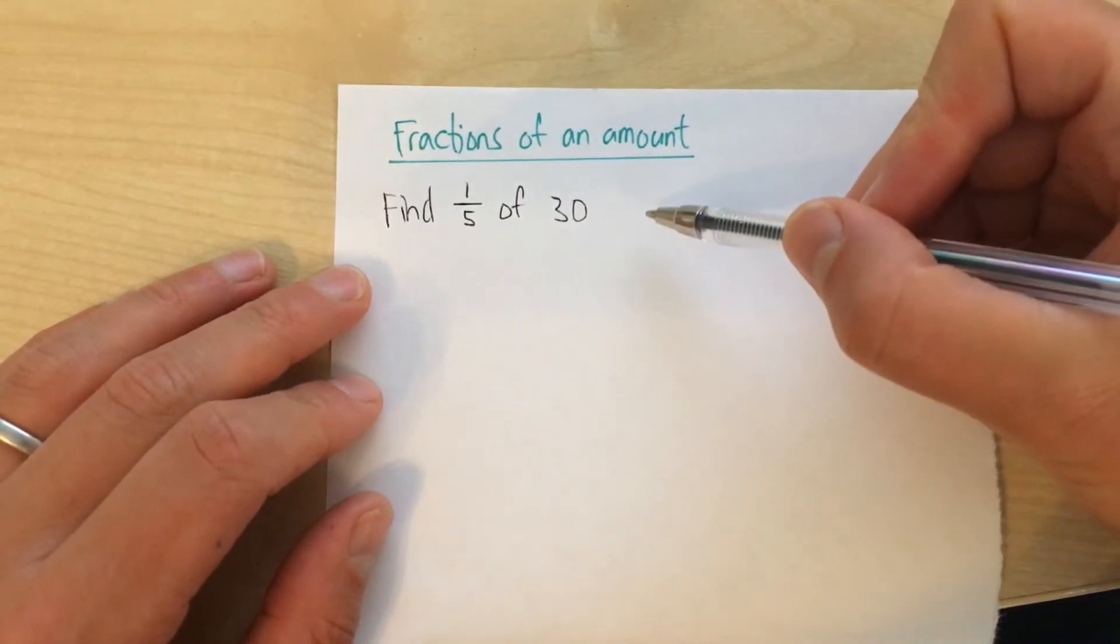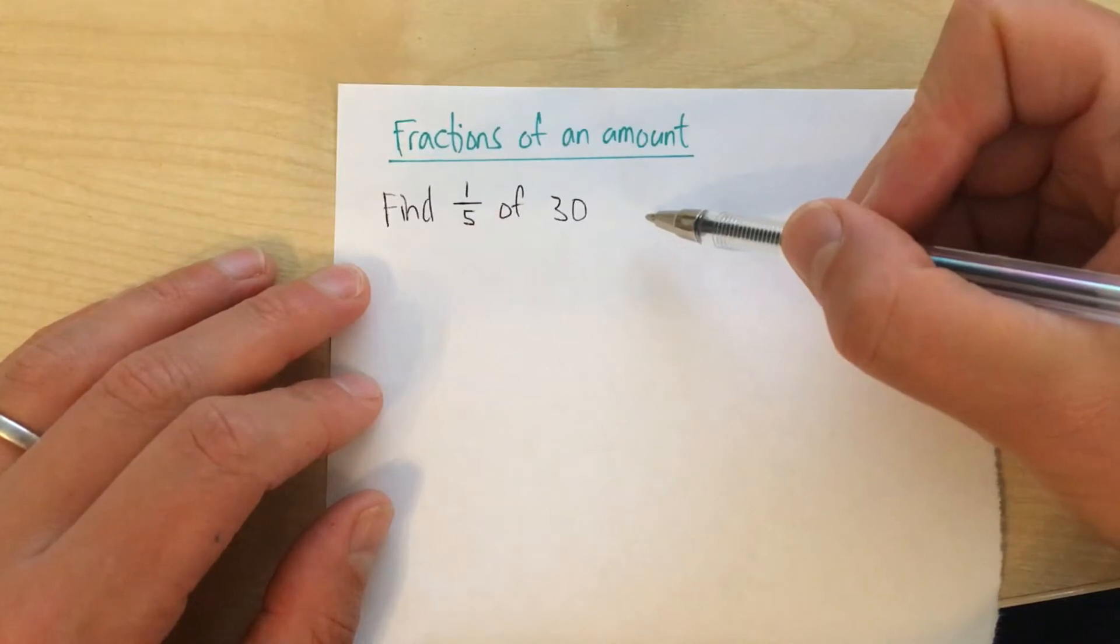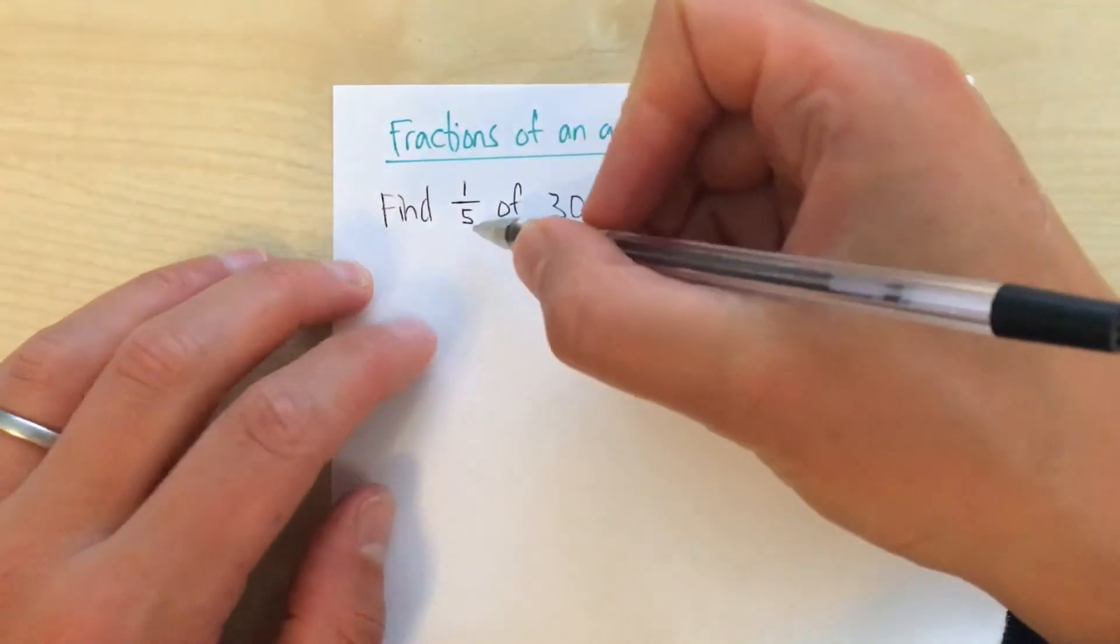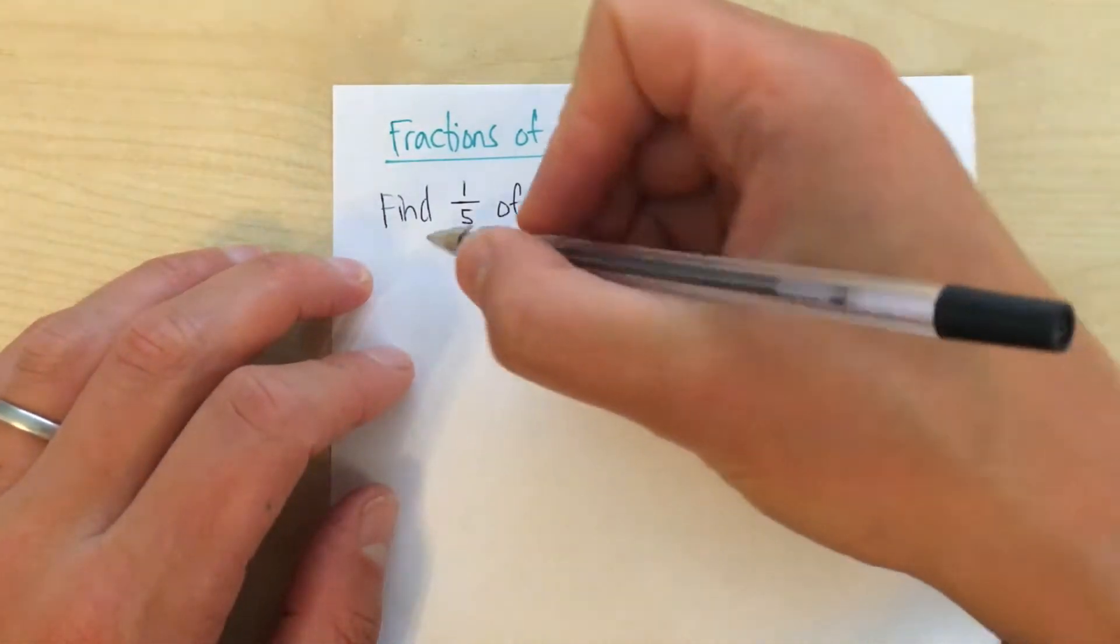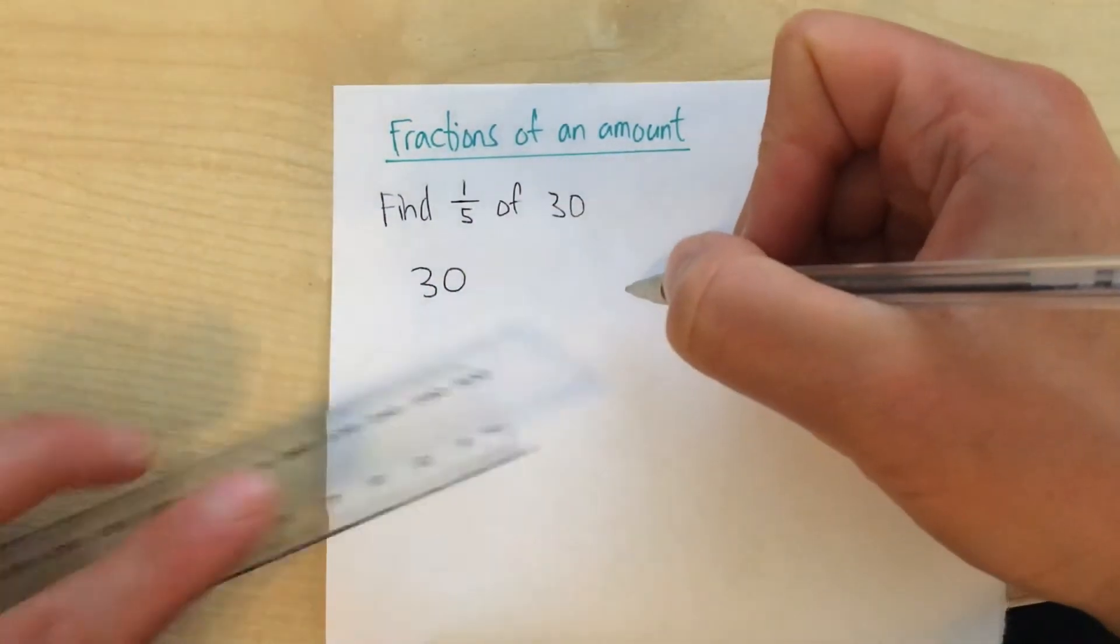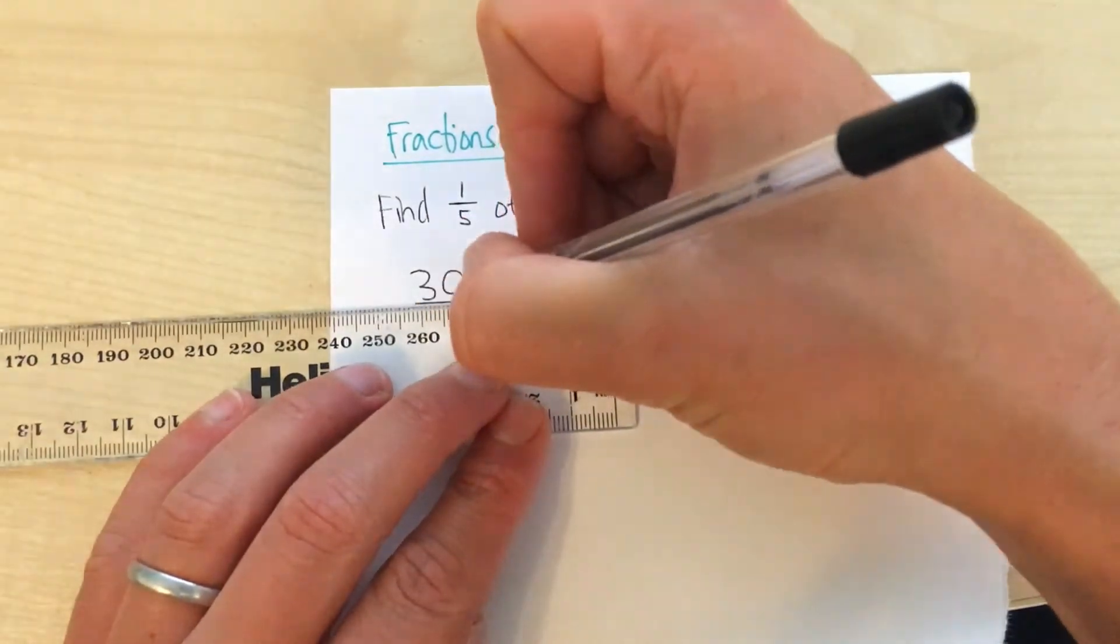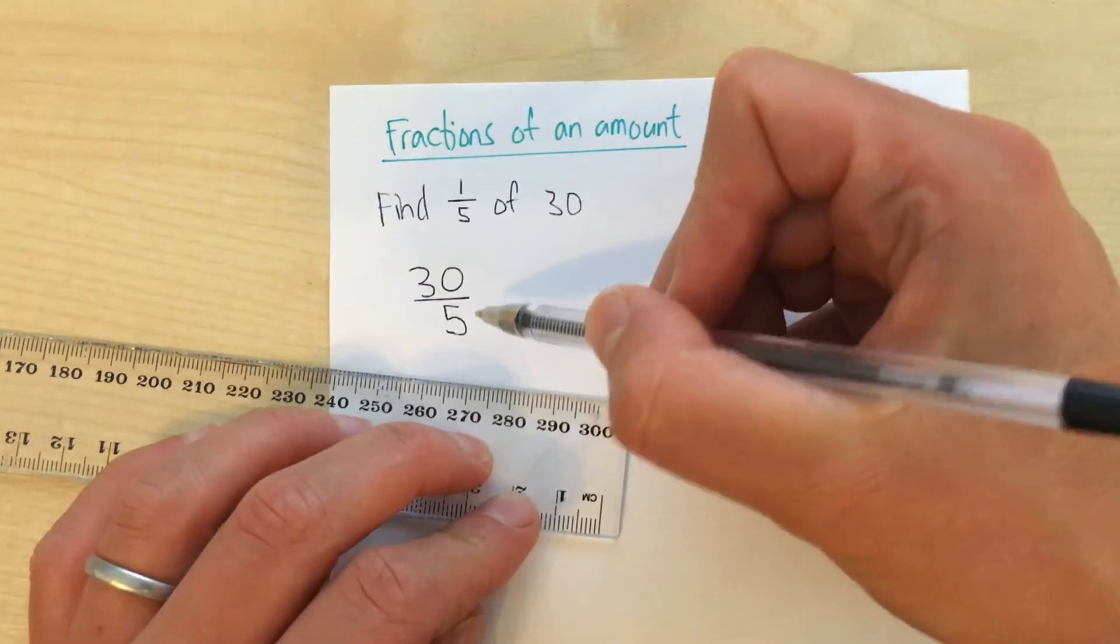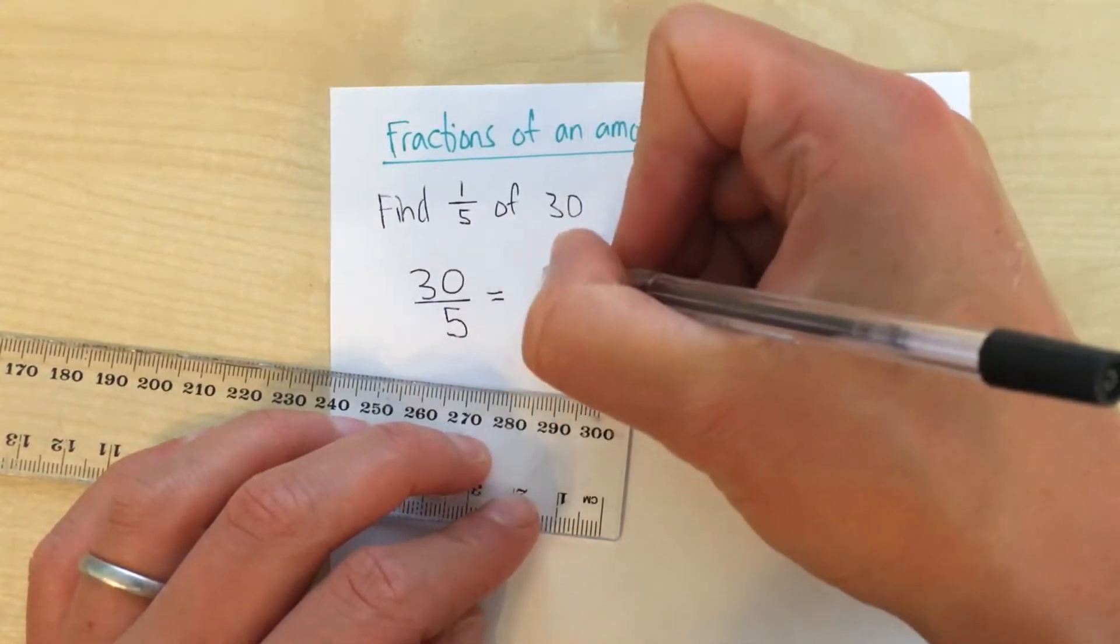Find 1 fifth of 30. Well, we can't always carry blocks around with us. So here's another way to do it. 1 fifth of 30. We want to divide 30 by 5. That will tell us what 1 fifth is. 30 divided by 5 equals 6.